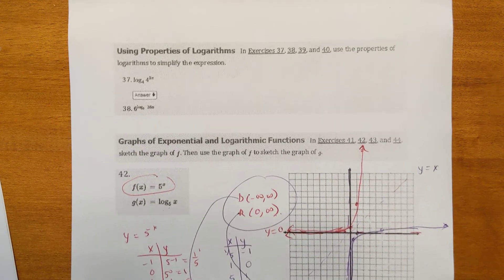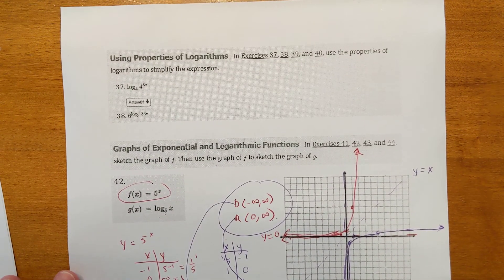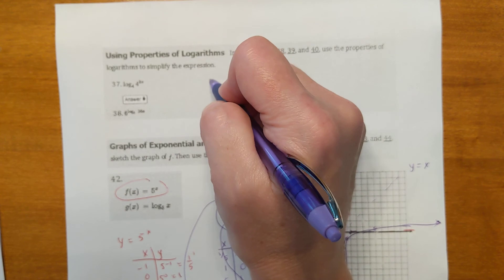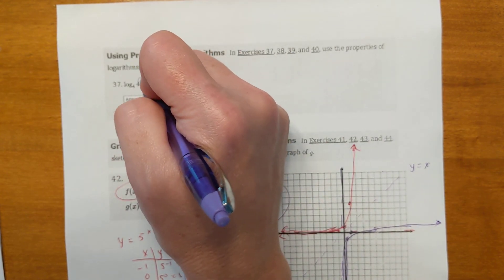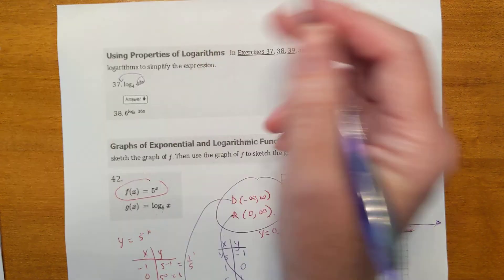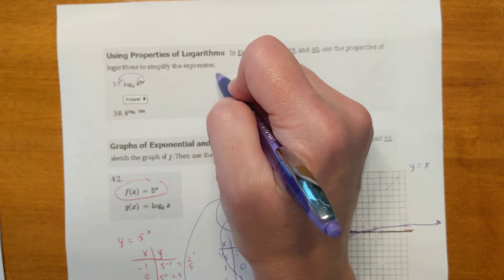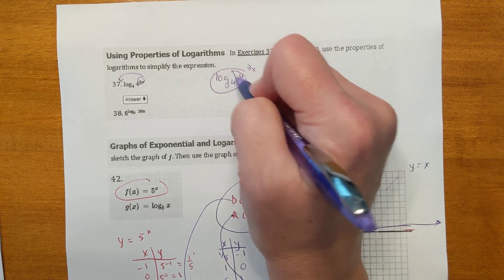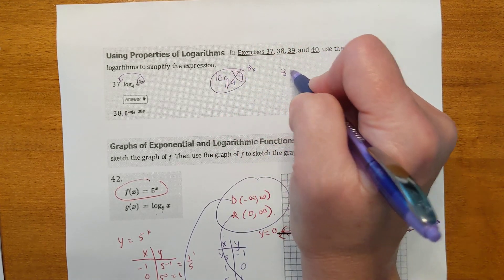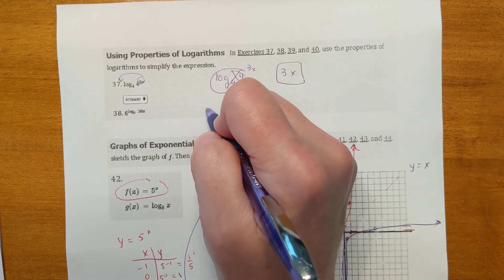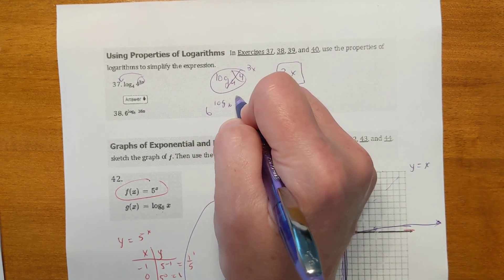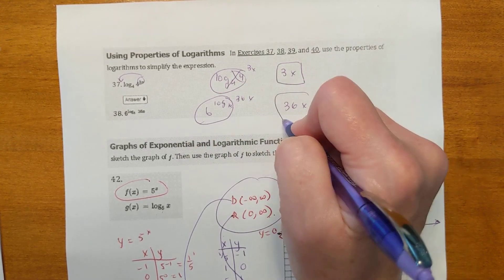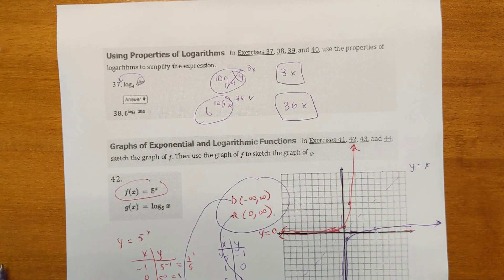Using the properties of logarithms to simplify: log base 4 of 4 to the 3x — same base, so that's just 3x. And 6 log base 6 of 36x — same base of 6, so that's just 36x. See you for the next lesson.